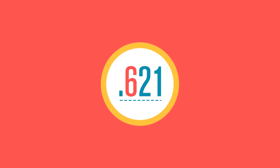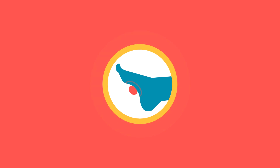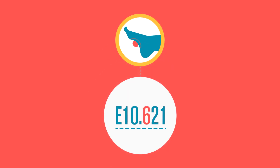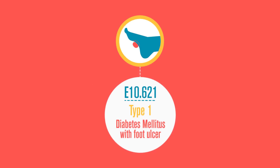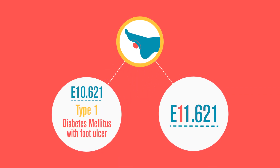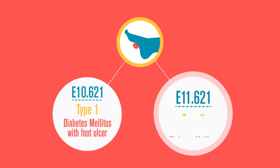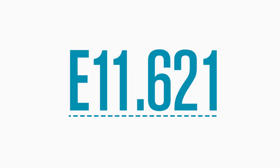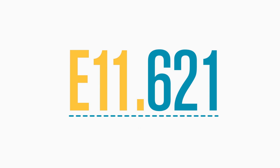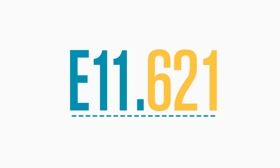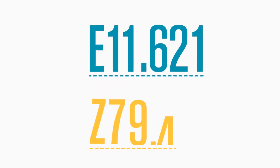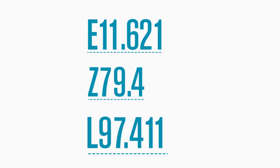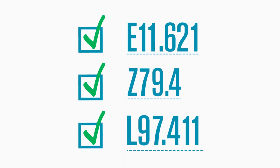For example, diagnosis code 621 describes the complication of foot ulcer. So E10.621 is type 1 diabetes with foot ulcer, and E11.621 is type 2 diabetes with foot ulcer. In this example, the provider has documented the category of diabetes and the complications. Use additional separate codes for treatment with insulin and to describe the site of the ulcer, and the coding is complete.